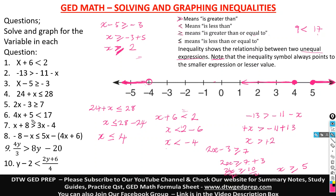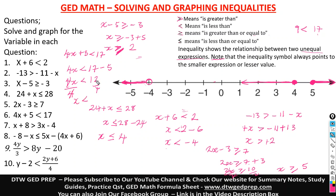Number 6 says 4x plus 5 less than or equal to 17. Taking positive 5 to the other side becomes negative: 4x less than or equal to 17 minus 5, which is 12. Divide both sides by 4: x is less than 3. Since it's just less than with no equal to, we draw an empty non-shaded circle at 3 and the line goes to the left.